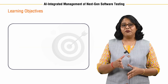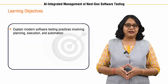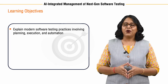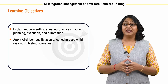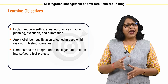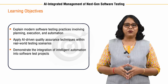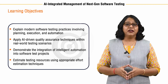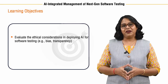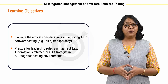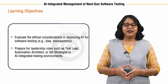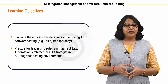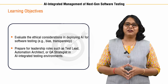By the end of this course, you will be equipped to lead modern testing practices with a clear understanding of planning, execution, automation and quality assurance using AI. You will gain practical hands-on insight on integrating intelligent automation into test projects while also handling resource estimation, team roles and ethical AI deployment. This course will position you for roles like test lead, automation architect, AI testing specialist or QA strategist, giving you the edge to thrive in today's digital-first environment.